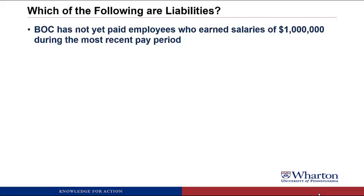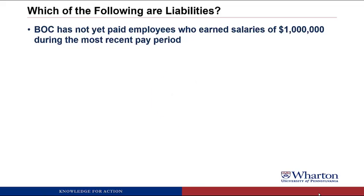BOC has not yet paid employees who earned salaries of $1 million during the most recent pay period. This would be a liability, which we're going to call salaries payable. It meets the first criteria because the employees have worked for us — we've gotten the benefit of their services, and now we have an obligation to pay them. The amount we owe is reasonably certain at $1 million. So we'd book a liability called salaries payable for $1 million.